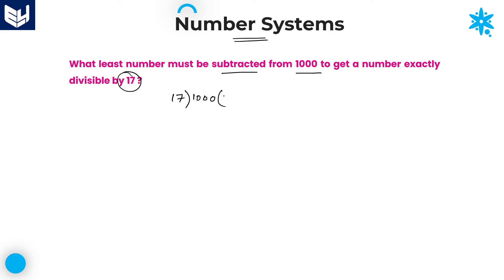How many times does 17 go? It goes 5 times — 5 times 85. Next, you're left over with 150. 150 means it is 8 times, since 9 times would be 153, which is more than 150. So 8 times: 8 times 17 is 136, which is 80 plus 56 equals 136. The remainder left over is 14.